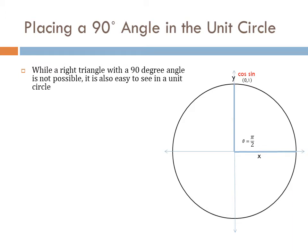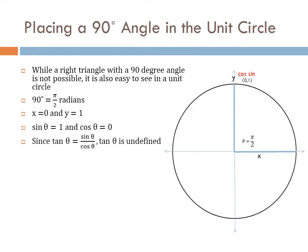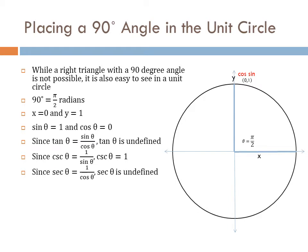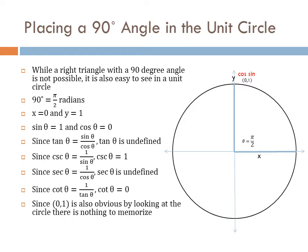Let's look at a 90 degree angle. Again, we can't build a right triangle with a 90 degree angle, but you can see it in a unit circle pretty easily. 90 degrees is pi over 2 radians. x is equal to 0, y is equal to 1. The sine is 1, the cosine is 0. The tangent is sine over cosine, so the tangent is undefined. The cosecant is 1 over the sine, so that is 1. The secant is 1 over the cosine, so the secant is undefined. The cotangent is 1 over the tangent, so the cotangent is 0. On a 90 degree angle our point is (0, 1), which is obvious just thinking about how the circle is constructed — nothing to memorize.